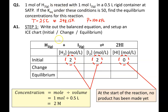What I like to do is write out the balanced chemical equation first — don't forget to balance it because you need those coefficients to determine the exponents. Write the information from the question directly underneath the pertinent compounds. The starting values are given in moles, but in the equilibrium expression they must be in moles per liter. So 1 mole divided by 0.5 liters equals 2 moles per liter for both hydrogen and iodine — these are our initial values.